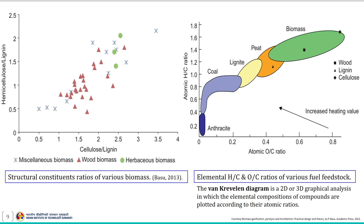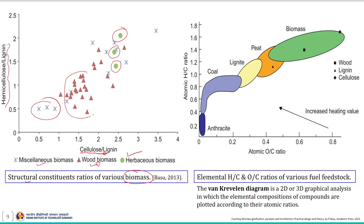This schematic compares the structural constituent ratios of various biomass feedstock materials — from cellulose to lignin ratio and from hemicellulose to lignin ratio. It appears that herbaceous biomass contains higher amounts of carbohydrate compared to miscellaneous biomass and woody biomass, showing relatively higher cellulose-to-lignin ratio and also higher hemicellulose-to-lignin ratio.